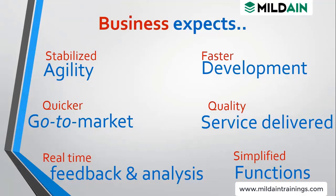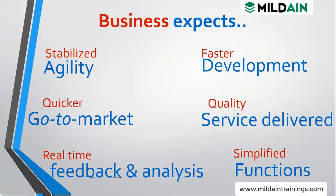Agility means work is divided into small chunks, done quickly, and immediate feedback is obtained. Agility was being used in development but not in operations. A question comes: when agility is already giving us faster time to market with immediate feedback, why does the term DevOps come? We will take that up later. Even with agility, the business was still getting slow releases.